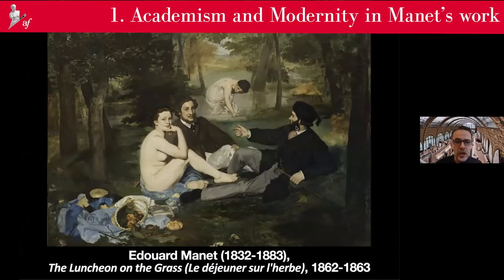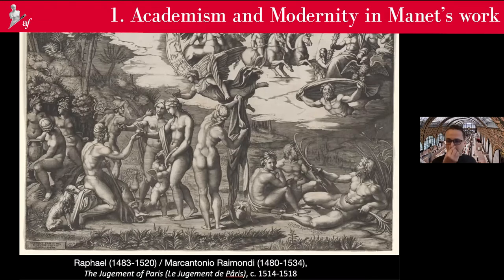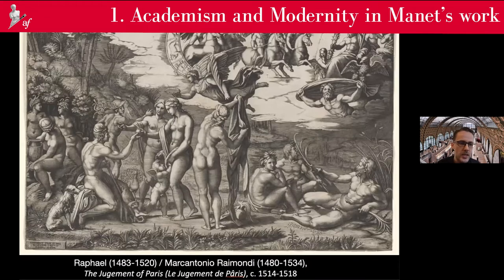If you observe the composition, the composition is very distinctive, and art historians found out that there was a deep connection with old masters. Now observe this other artwork. Try to observe it in detail. This artwork is actually a print made from an original painting by Raphael that has been lost. We know the Raphael painting only through the Raimondi print — that's why it's in black and white. Try to observe it and anticipate the connection with Luncheon on the Grass.